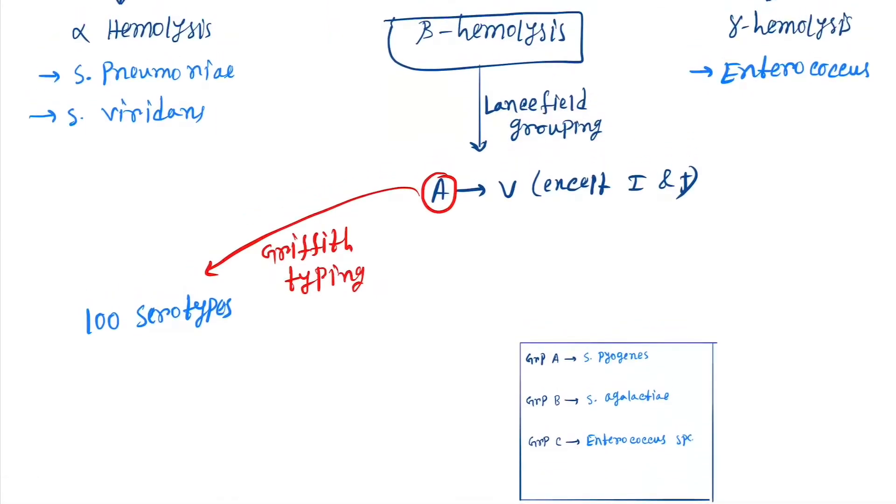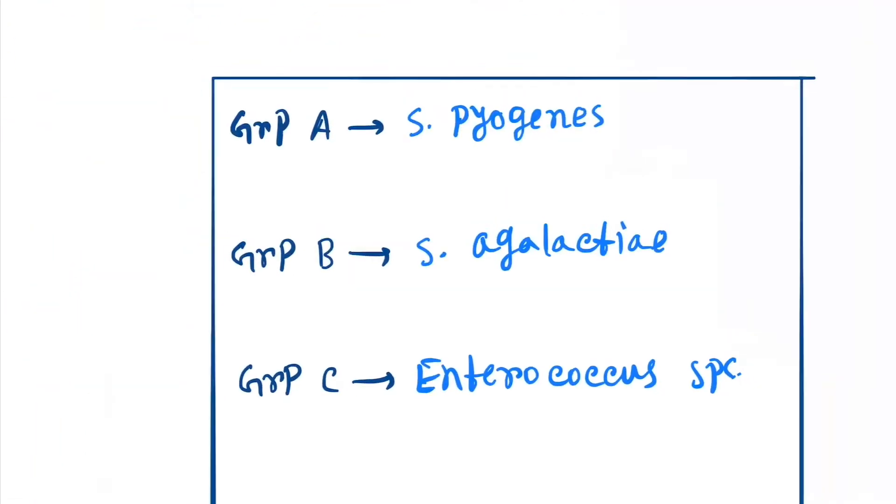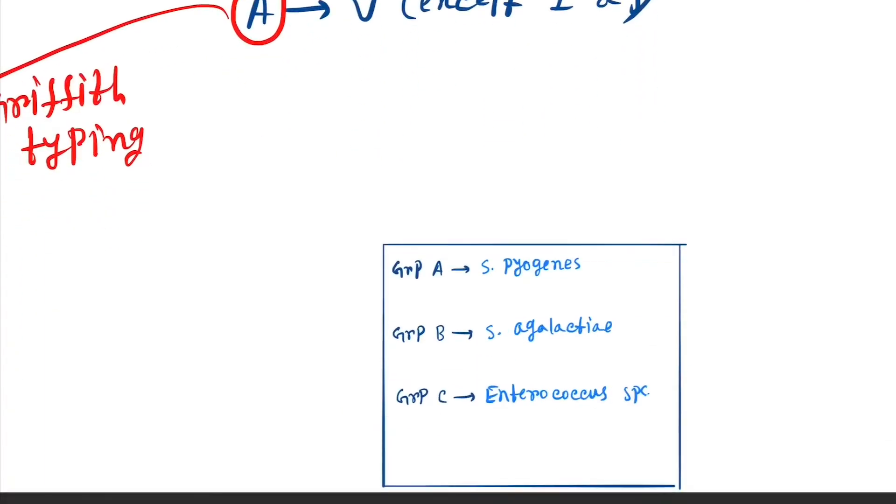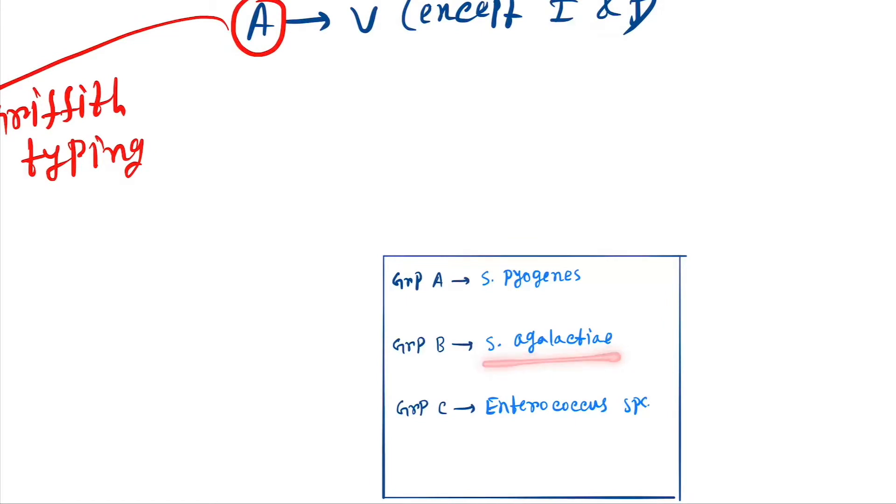Beta hemolysis is classified from A to B except I and J, and this classification is called Lancefield grouping. Group A is further classified by 100 serotypes and this classification is Griffith typing. Group A Streptococcus is Streptococcus pyogenes, B is Streptococcus agalactiae, and C is Enterococcus faecalis.